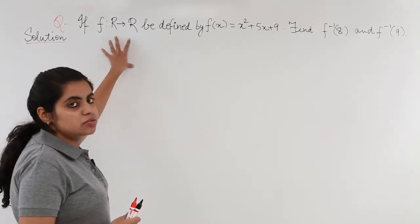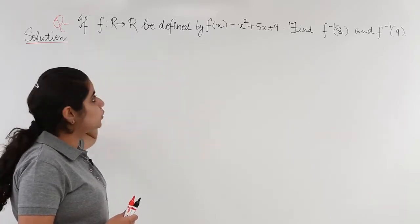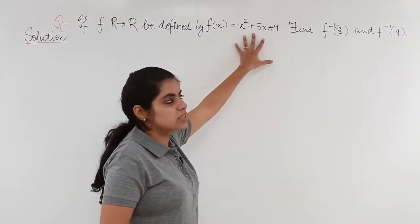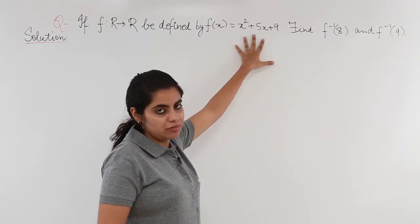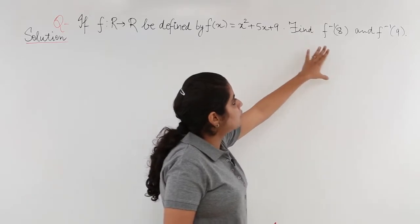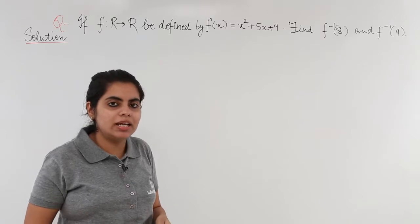If a function is from real to real, that means the co-domain as well as the domain is given to me as real numbers, defined as f(x) = x² + 5x + 9, which is a quadratic expression. We have to find what is f⁻¹(8) and what is f⁻¹(9).